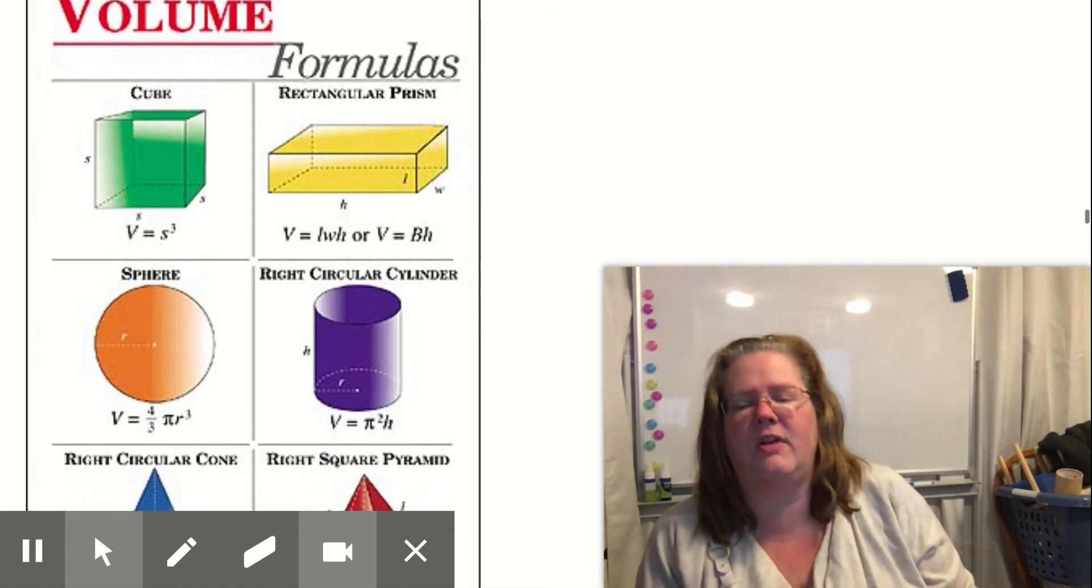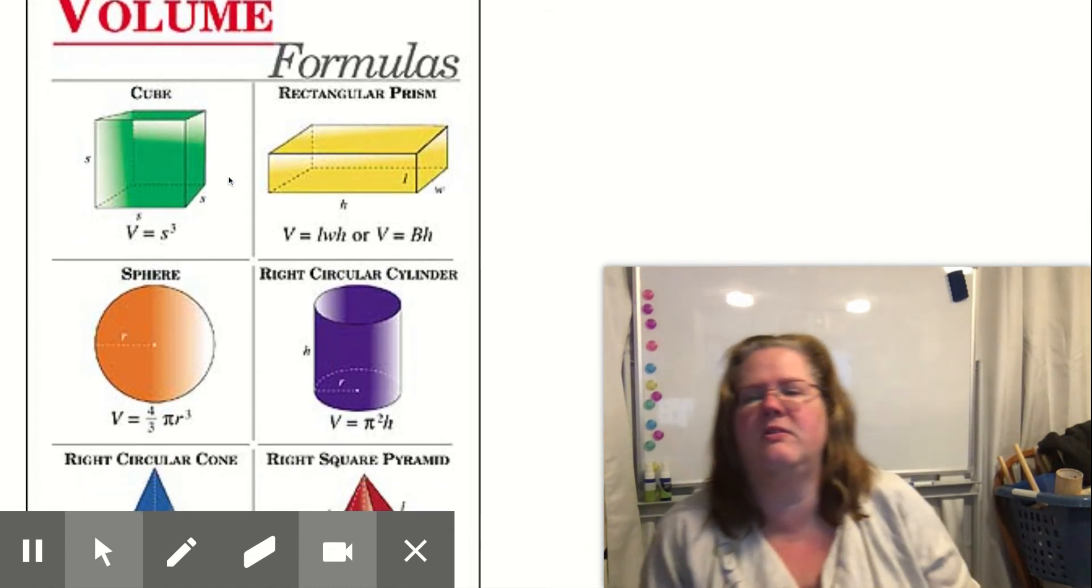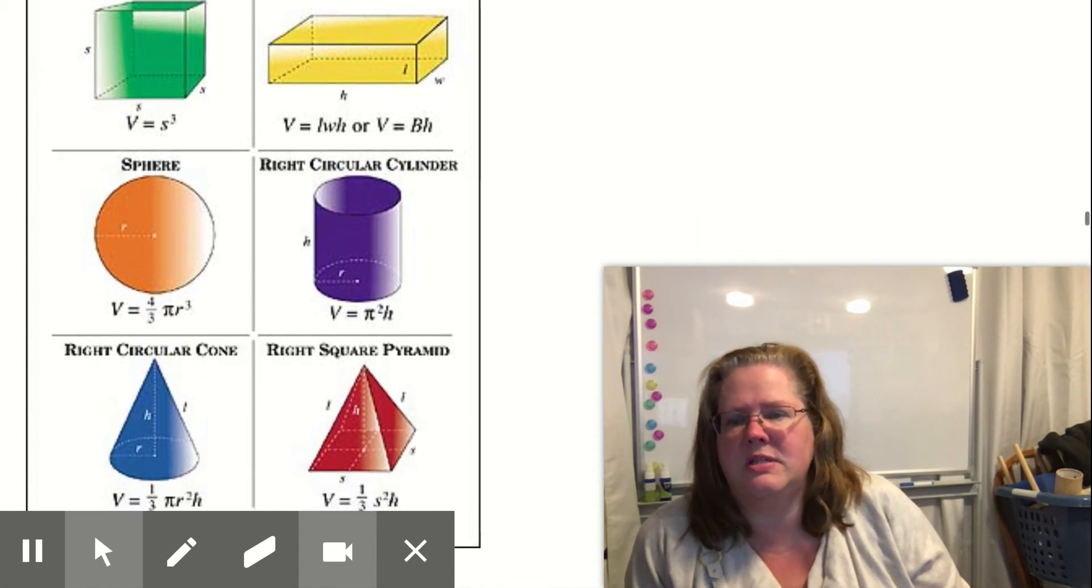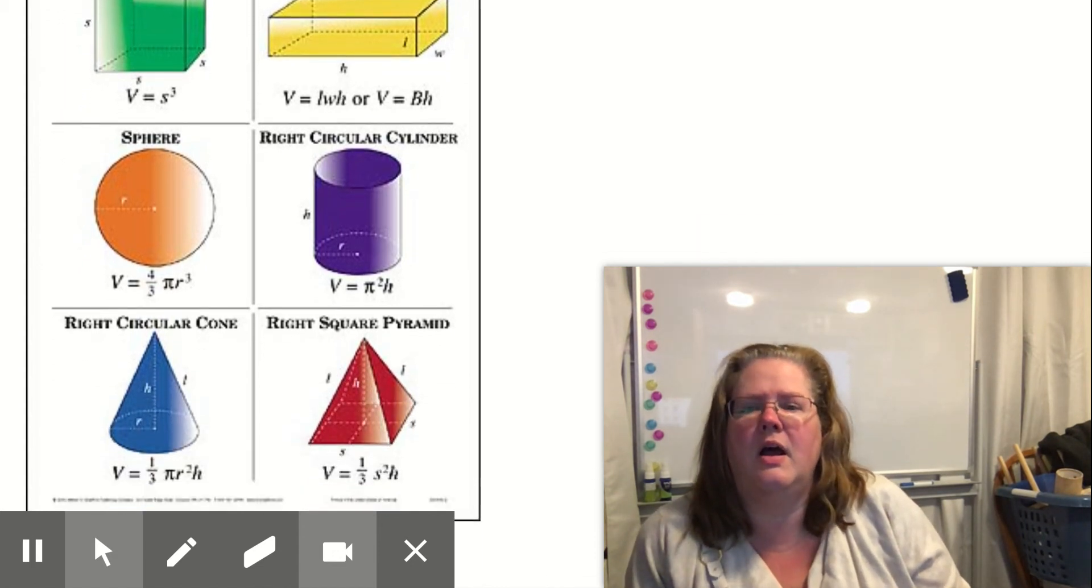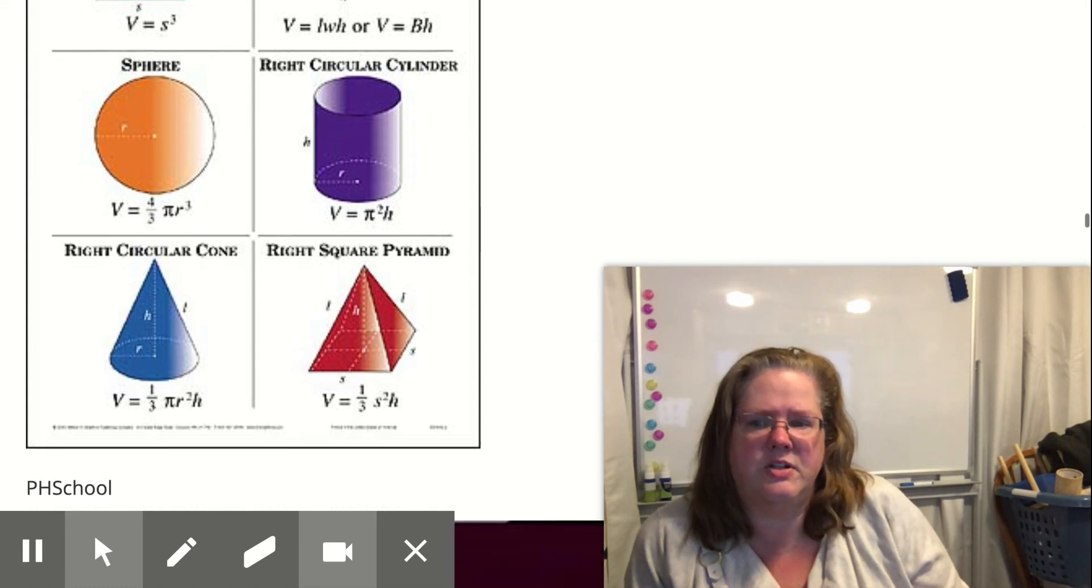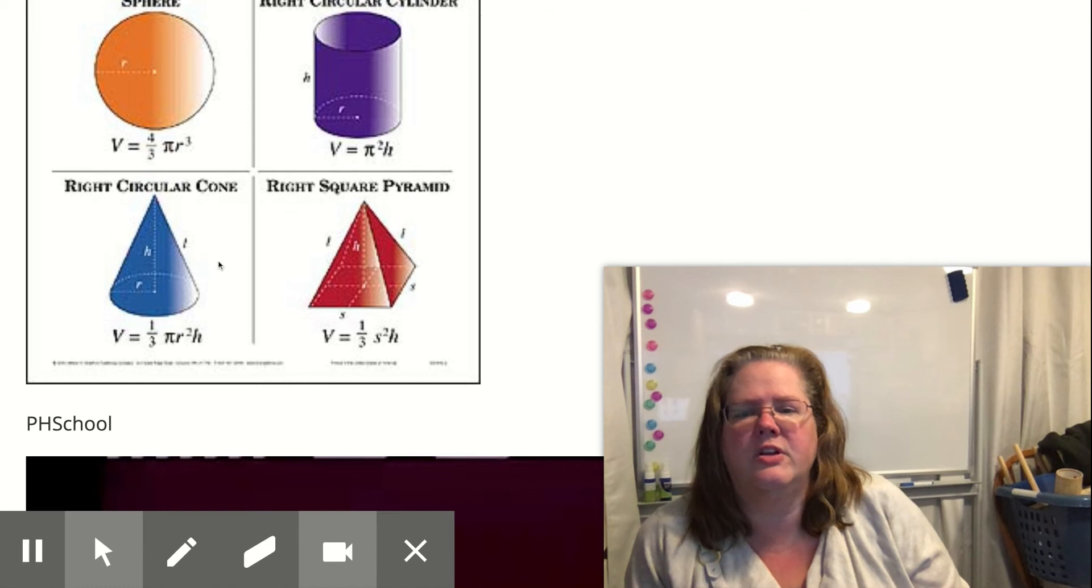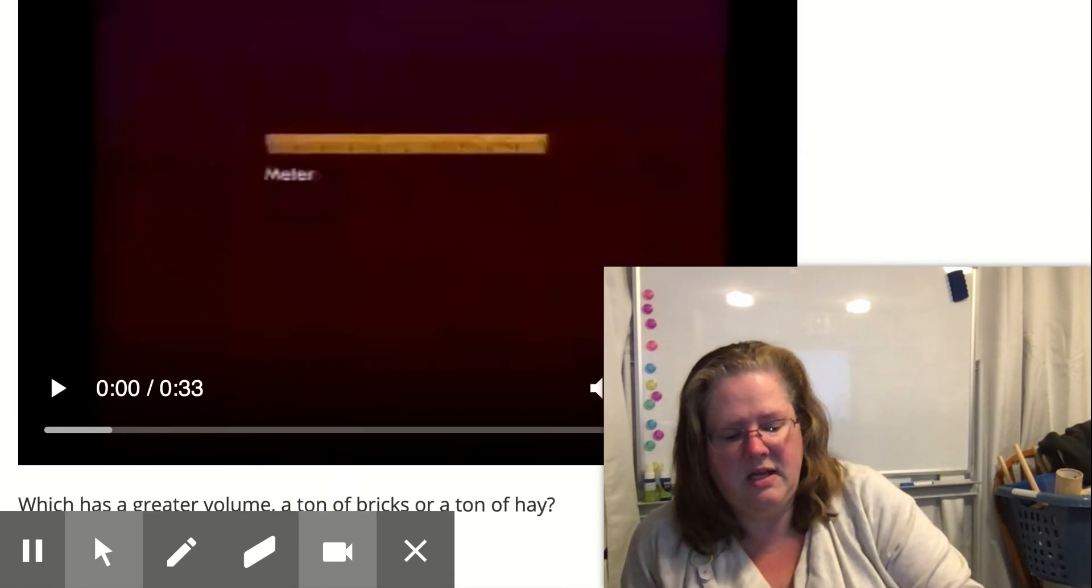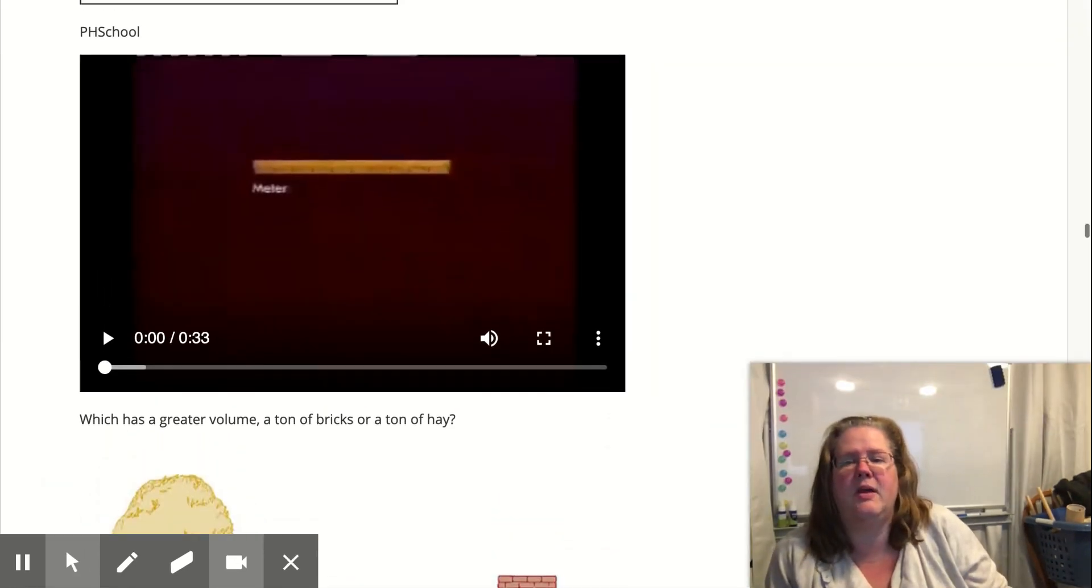So we have a variety of volumes. You should all look familiar from math. We can find the volume of a cube and the volume of a rectangular prism, a sphere, a right cylinder, circular cylinder. We can find a circular cone or a three-sided pyramid or a four-sided pyramid. All of those things we can actually find different formulas for that make it work.